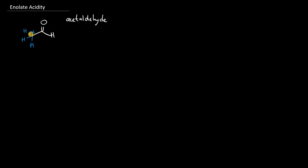So why are these alpha protons acidic? It turns out if we look at the carbonyl oxygen, we need to understand that it's electronegative, and therefore it more readily bears a negative charge. So between this carbonyl carbon and this oxygen, we see a pi bond, but then the electron density is more concentrated on the oxygen than on the carbon. That's why we say the carbonyl oxygen is partially negative, whereas the carbonyl carbon is partially positive.